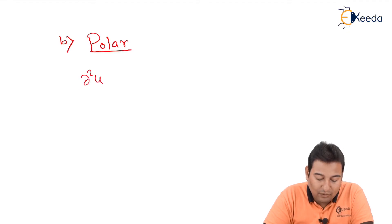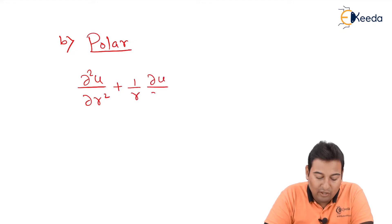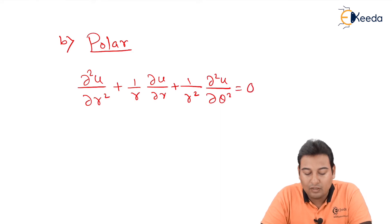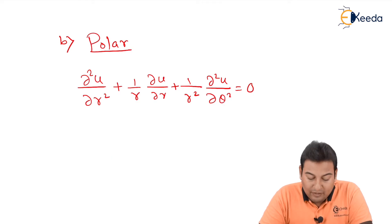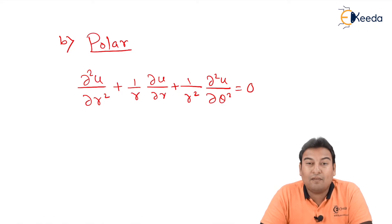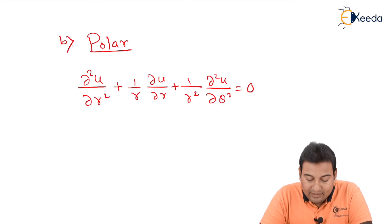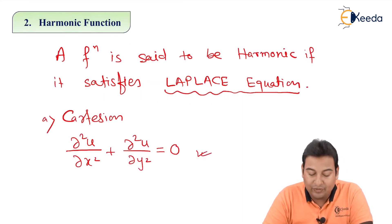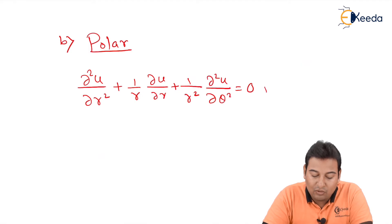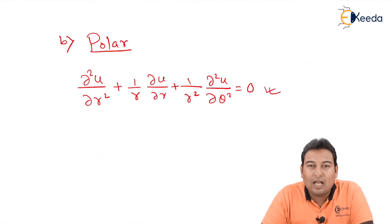For polar, if u is given, we differentiate double with respect to r, plus 1 upon r times ∂u/∂r, plus 1 upon r² times ∂²u/∂θ² equal to 0. This is the Laplace equation in polar. So if x and y are given we check the Cartesian equation, and if r and theta are given we check the polar equation for the function to be harmonic. Now I'll give you two examples, one on Cartesian and another on polar.